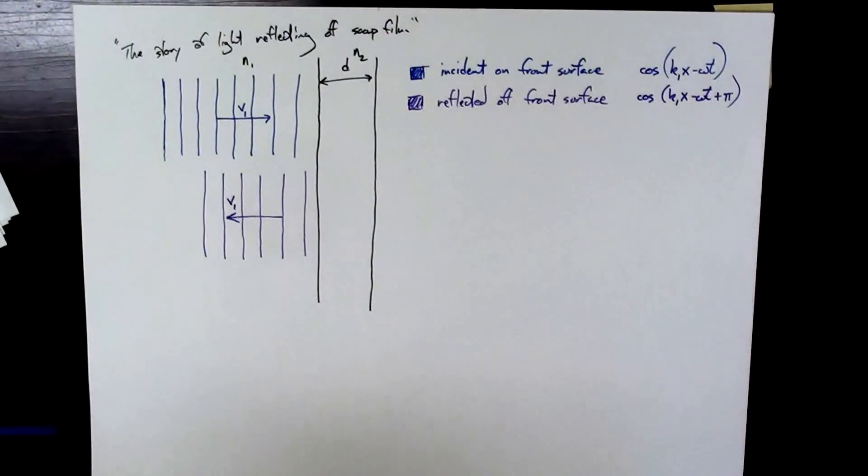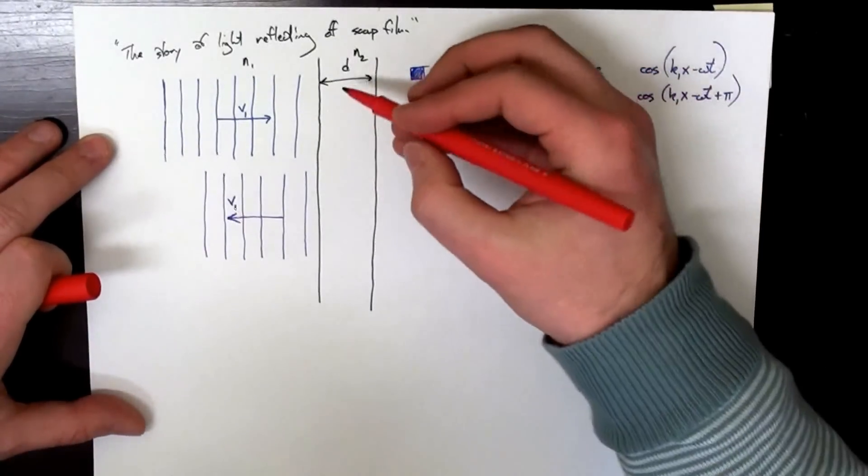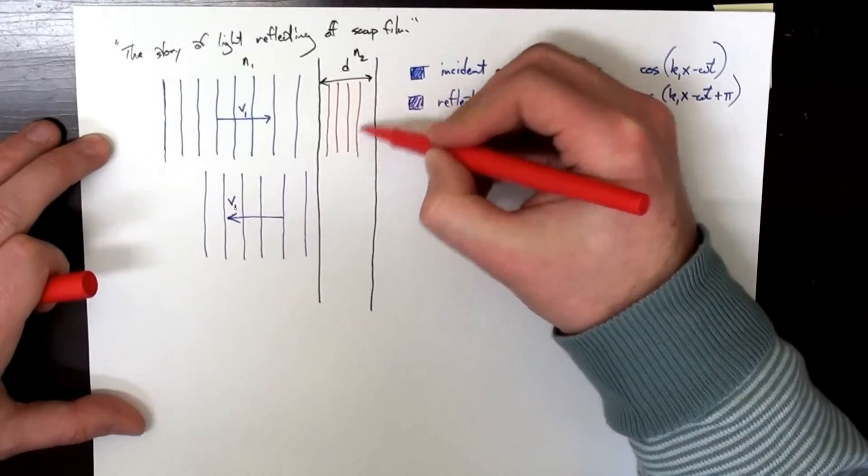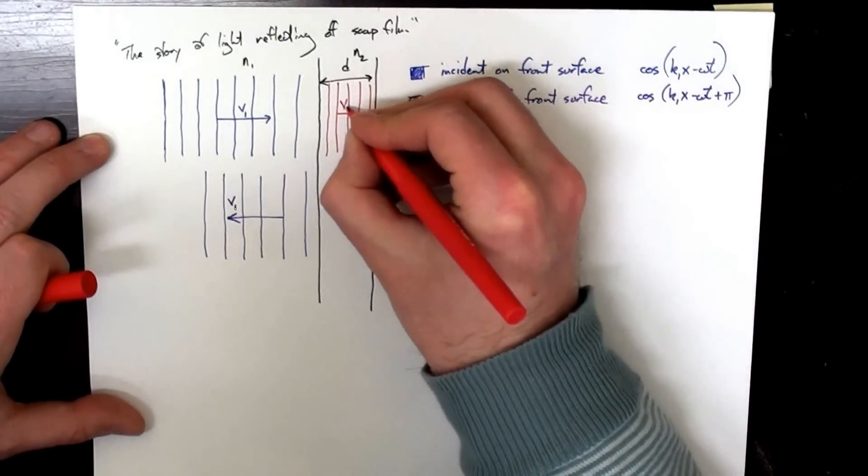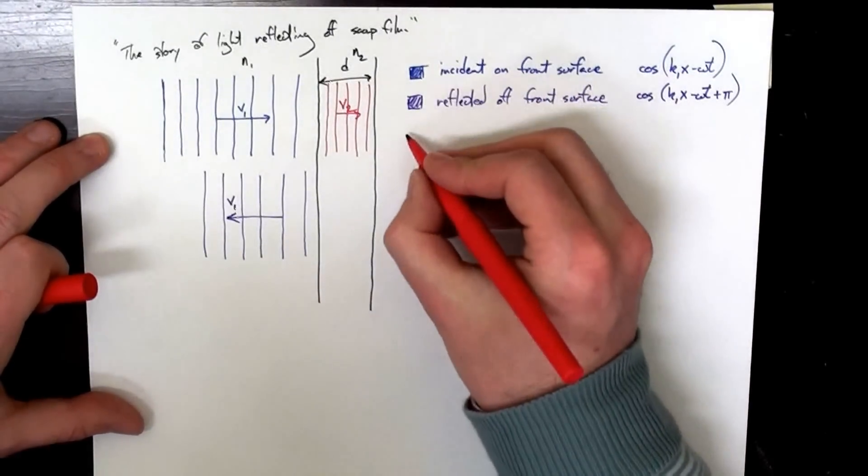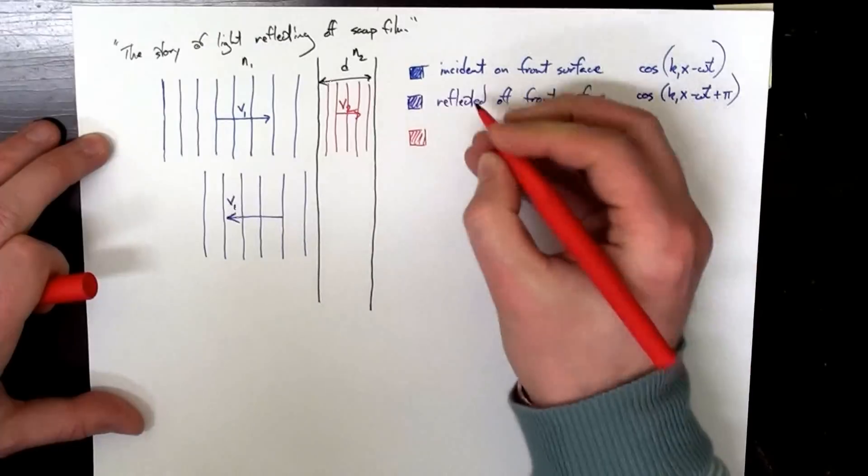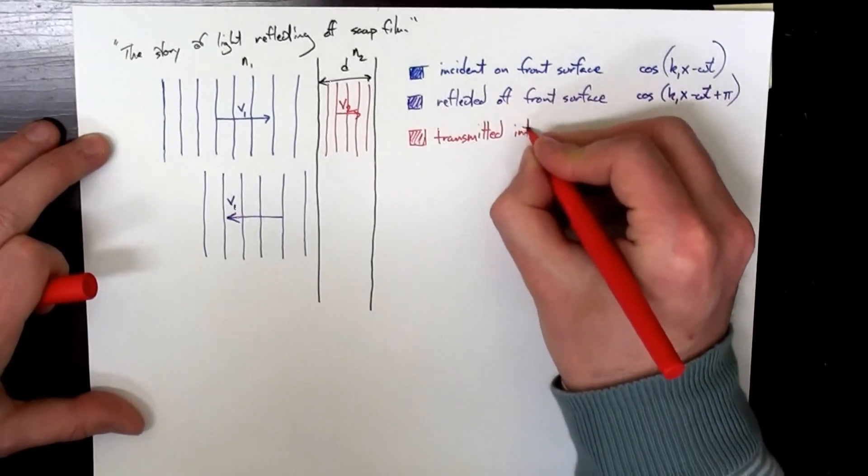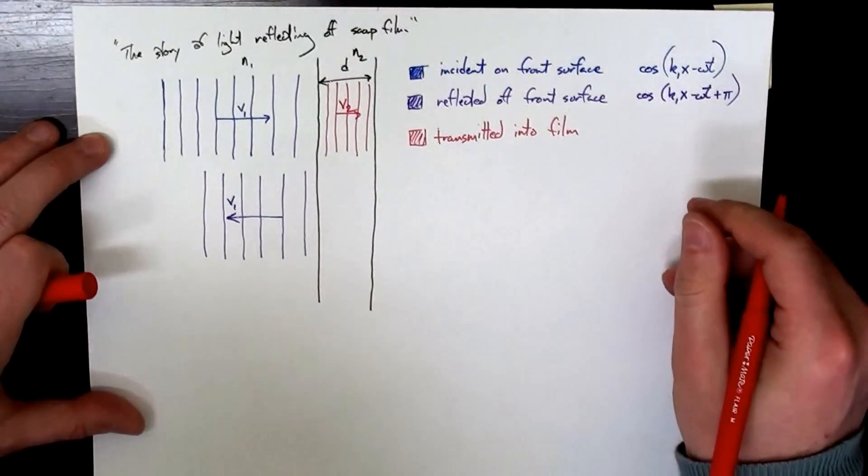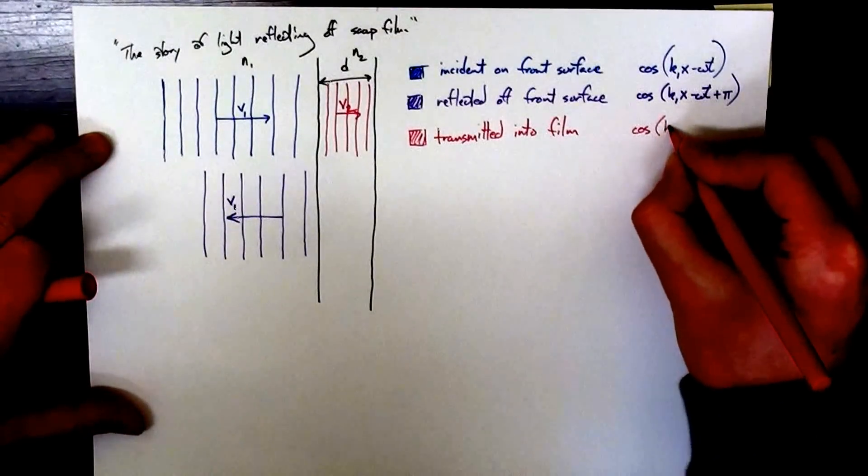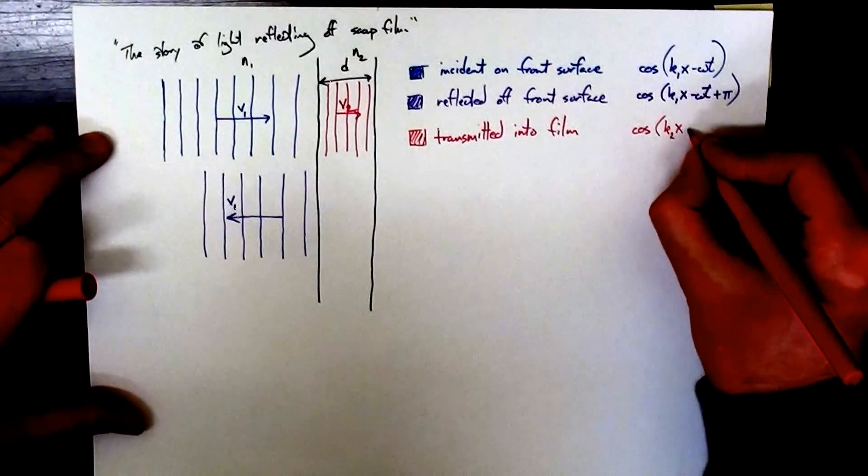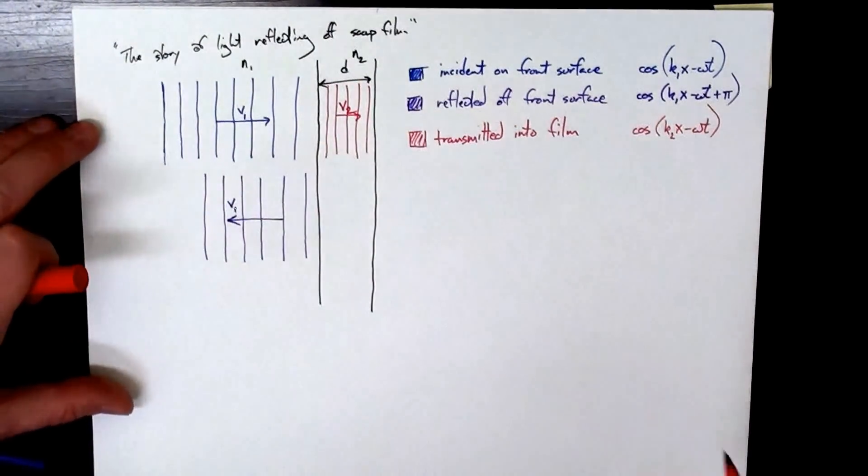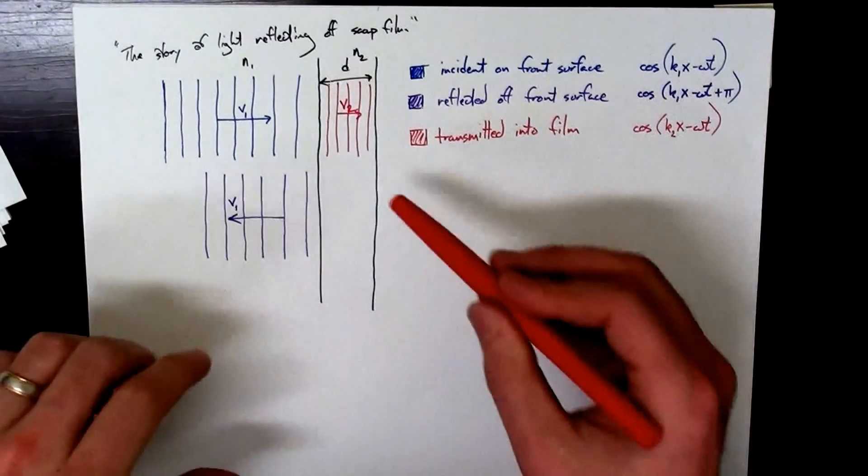Now there's a part of this wave, this original wave, that went into the soap film. And it had a different wavelength and therefore a different wave number. And it had a different velocity. So transmitted, this part of the wave was transmitted into the film. And it's described by cosine, now K2 of X, minus omega t. K2 is different from the wave, or the wave number outside because there's a different index of refraction inside the soap film.